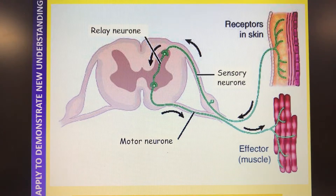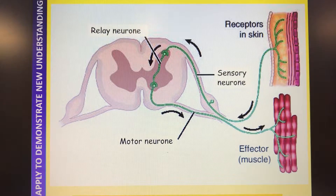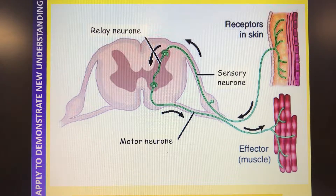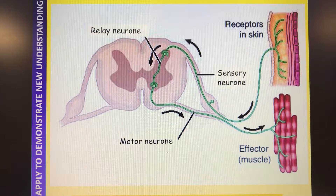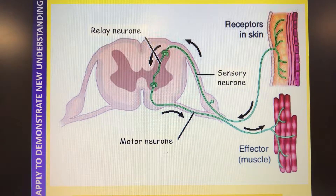Then we've got three neurons. We start with the sensory neuron - we remember it because we just sensed some information. That goes to the central nervous system, where we have a really short neuron called the relay neuron, completely housed within the central nervous system, within that spinal cord. We remember this because it's like the baton in a relay race, passing the information to the third neuron - the motor neuron. We can remember the motor neuron because motors have movement, and the motor neuron is going to cause the muscles to contract in the arm to pull you away from whatever danger the stimulus is.